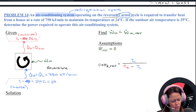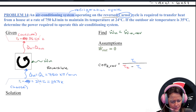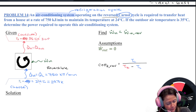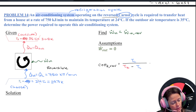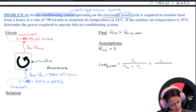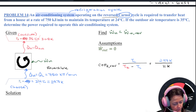Since it's reversible, I can calculate my coefficient of performance as TL over TH minus TL. Temperatures must be in absolute units. TL is 24 plus 273 equals 297 Kelvin. TH is 35 plus 273 equals 308 Kelvin. So I've got 297 on top and 308 minus 297, which is 11 Kelvin on the bottom. That gives me a COP of 27.